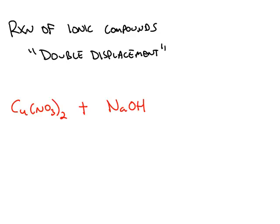Next we want to look at the reaction between ionic compounds, and the type of reaction is called a metathesis reaction or a double displacement reaction.